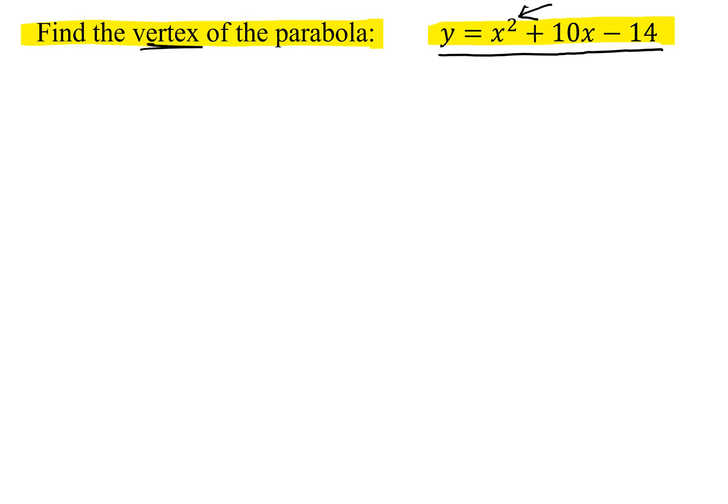Now, to find the vertex of the parabola, we need to know a formula. The formula for the x-value of the vertex is x equals negative b over 2a.